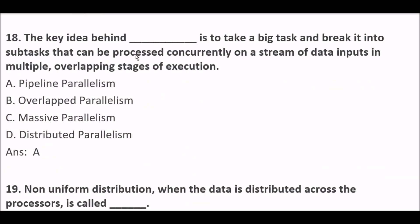Next question. The key idea behind blank space is to take a big task and break it into subtasks that can be processed concurrently on a stream of data inputs in multiple overlapping stages of execution. Option A: Pipeline parallelism. Option B: Overlapped parallelism. Option C: Massive parallelism. Option D: Distributed parallelism. Right answer is Option A — Pipeline parallelism.